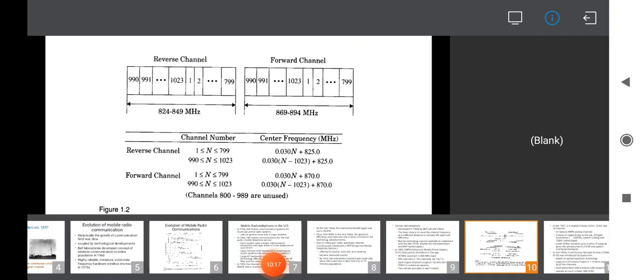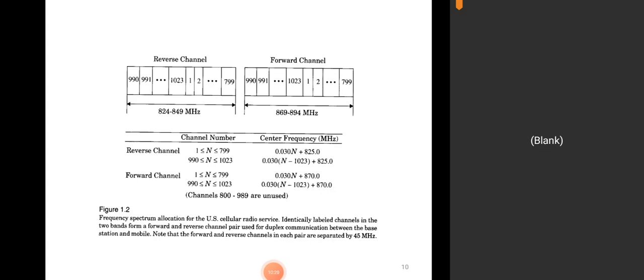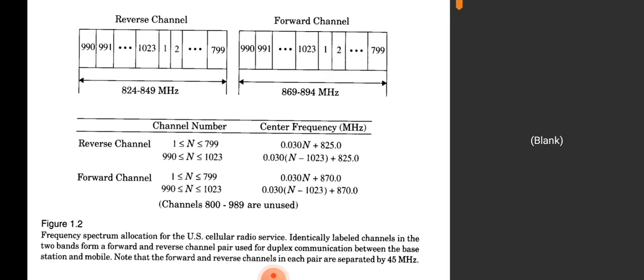Now, what is the forward channel and reverse channel? These are similar to uplink and downlink frequencies. When you are transmitting, you act as the source and the other person acts as receiver, and vice versa — these are the reverse and forward channels. The reverse channel range is 824 to 849 MHz, and the forward channel range is 869 to 894 MHz. Center frequencies are given by 0.030n plus 825 MHz.